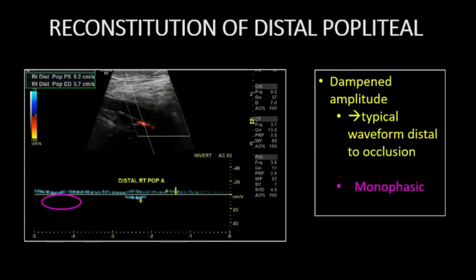In this patient, superficial femoral artery occlusion was encountered, but as is often seen, profunda femoris collaterals reconstituted the popliteal artery distally. The waveform is abnormal but flow is detected. Clearly, the amplitude is severely diminished.